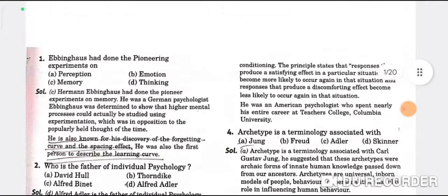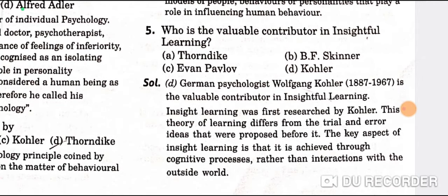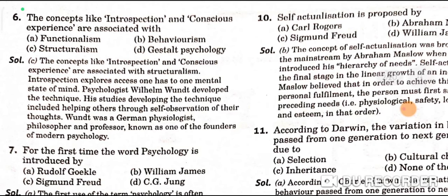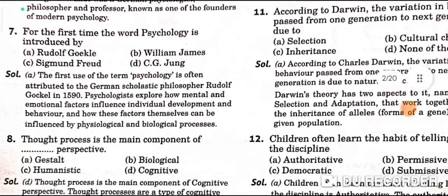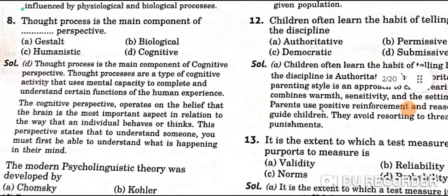Question 4: Archetype is a terminology associated with Jung's classification — A is the correct option. Question 5: Who is the valuable contributor in insightful learning? Kohler — D is the correct option. Question 6: The concepts like introspection and conscious experiments are associated with structuralism — C is the correct option. For the first time the word psychology was introduced by Rudolph Gockel — A is the correct option. Question 8: Thought process is the main component of the cognitive perspective — D is the correct option.